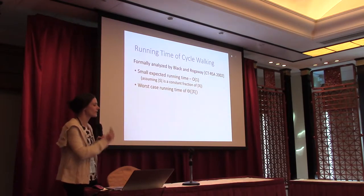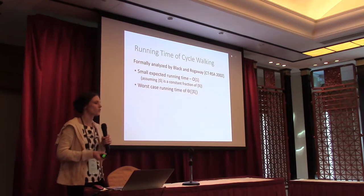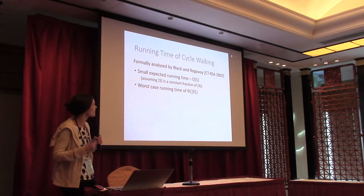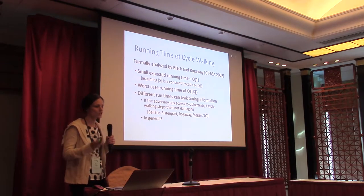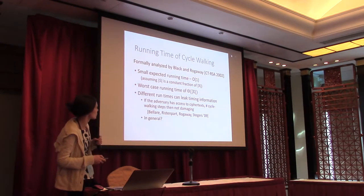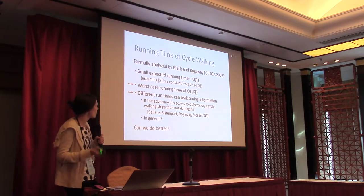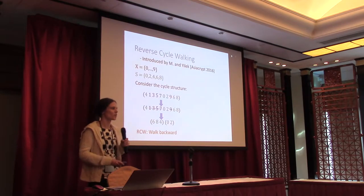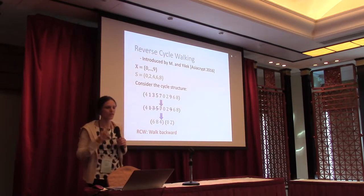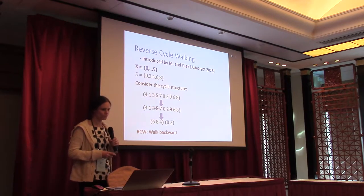The downside is that the worst case running time can be really large — you can keep encountering points that aren't in our target set, and in the worst case, you'll encounter |X| minus |S| points. In addition, we can have different running times, which can potentially leak timing information. But last year at Asiacrypt, I gave a talk about another algorithm that overcomes some of these drawbacks.